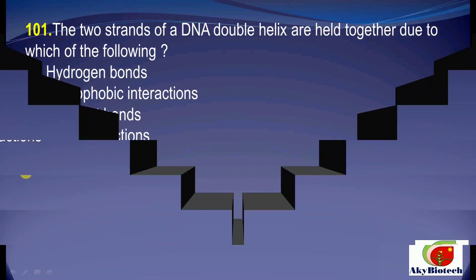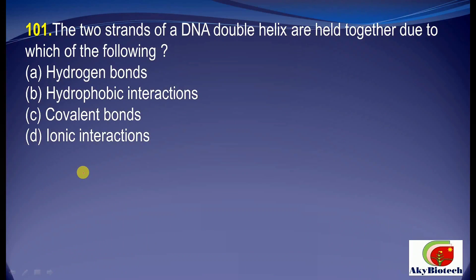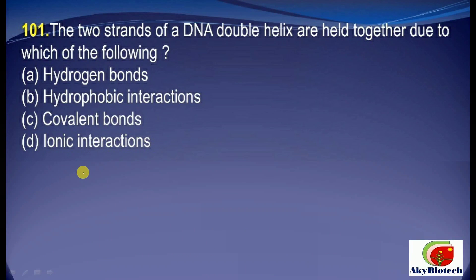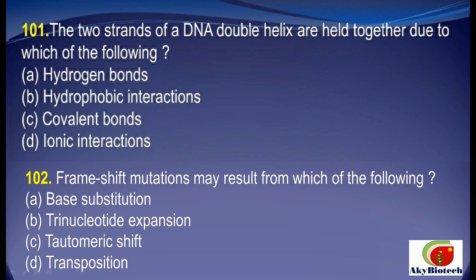We will discuss about 25 questions. Let's start. Question 1: The two strands of a DNA double helix are held together due to which of the following? The correct answer is A — hydrogen bonds. Question 2: Frame shift mutations may result from which of the following? The correct answer is D — transposition.